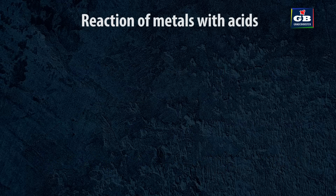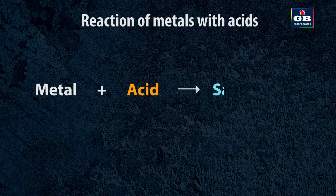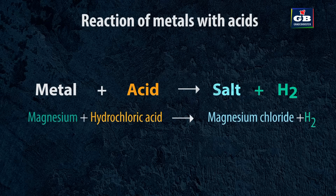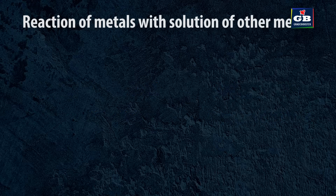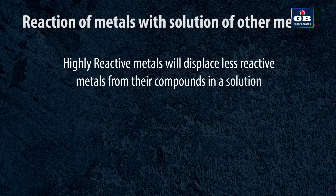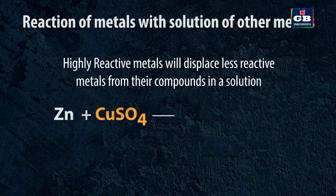Reaction of metals with acids: metals react with acids to give salt and hydrogen gas. For example, magnesium reacts with hydrochloric acid and forms magnesium chloride plus hydrogen gas. Reaction of metals with solution of other metals: highly reactive metals will displace less reactive metals from their compounds in solution. For example, zinc reacts with copper sulfate solution and forms zinc sulfate and copper metal.